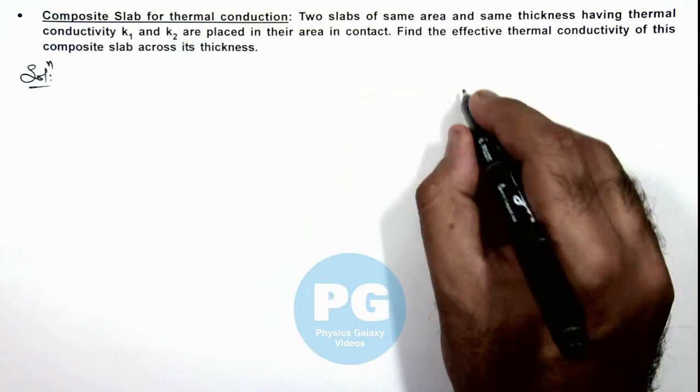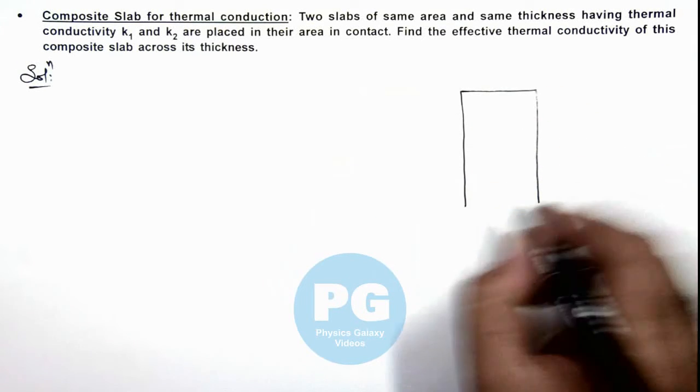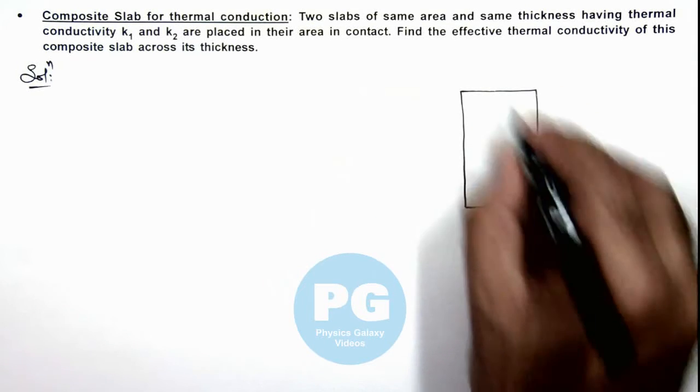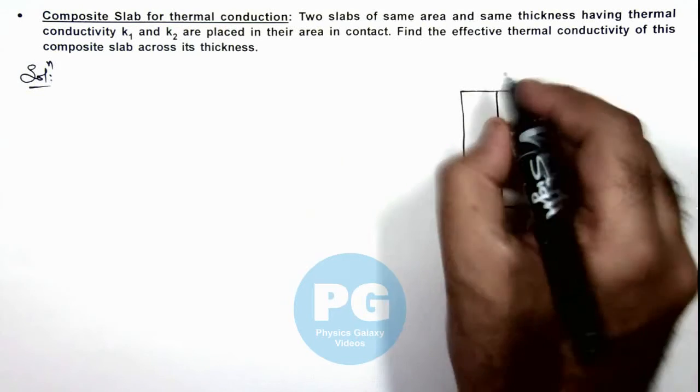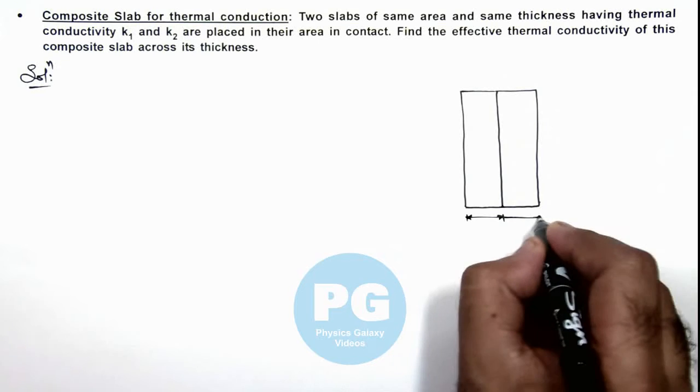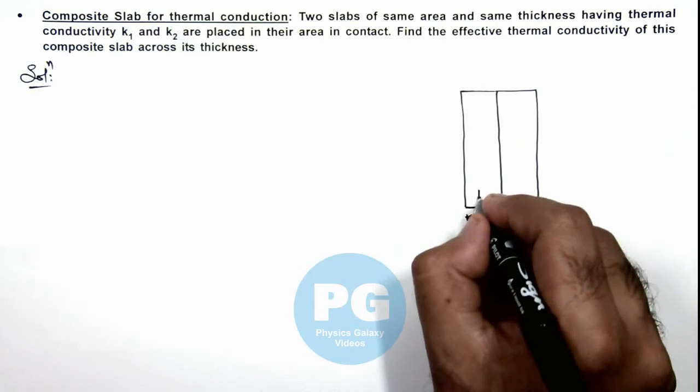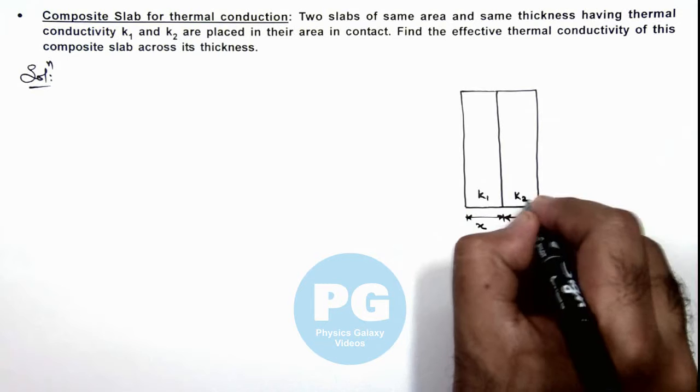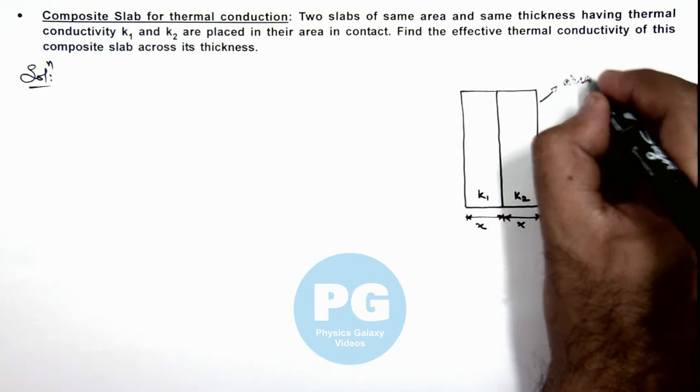Here we can draw the picture of these slabs. These are the two slabs which are of same thickness. Here we can consider their thickness to be x and x, and thermal conductivities are k1 and k2, and we consider their cross-sectional area to be equal to A.